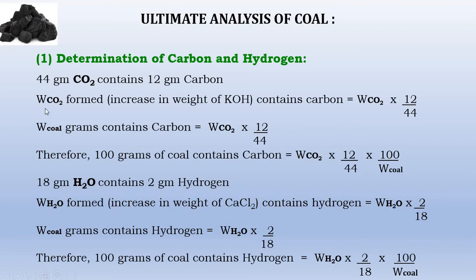The amount of carbon dioxide formed is determined by the increase in weight of the KOH tube, because KOH absorbs the carbon dioxide. The weight of H₂O is determined by the increase in weight of CaCl₂ present in the U-tube, because anhydrous calcium chloride absorbs the water vapors. With the weight of water vapors and carbon dioxide formed, we can calculate the weight of carbon and hydrogen and convert them into percentages.